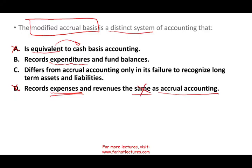Option B records expenditures and fund balances — yes, we do use both in modified accrual, so it's a strong candidate. Option C says it differs from accrual accounting only in its failure to recognize long-term assets and liabilities. That is partially correct — it does differ in that way — but C is not fully correct. It also differs in revenue recognition: under modified accrual, revenue is recorded when funds are measurable and available to finance current expenditures. So C uses the word 'only,' which makes it wrong. B is the best answer.